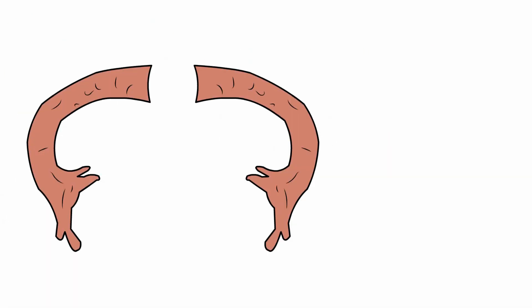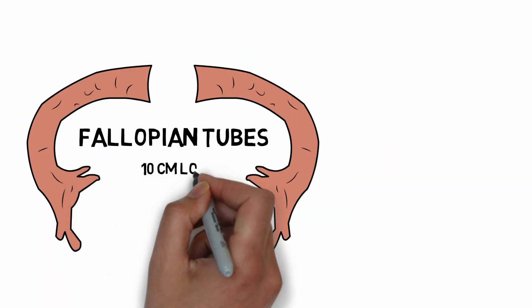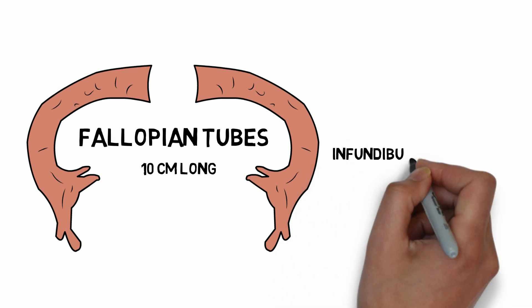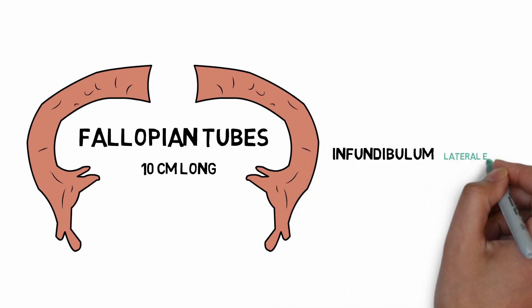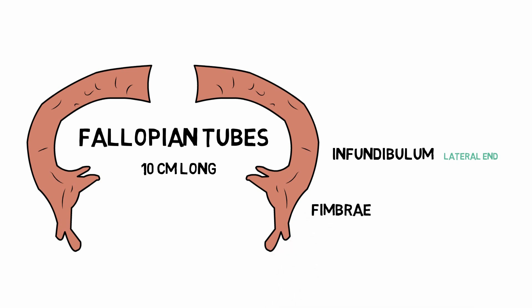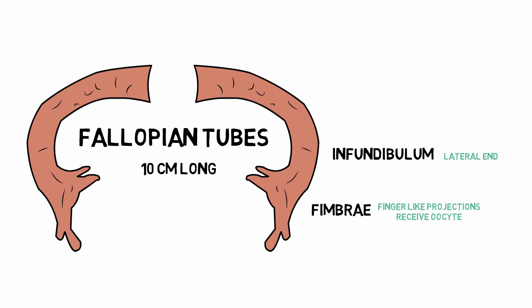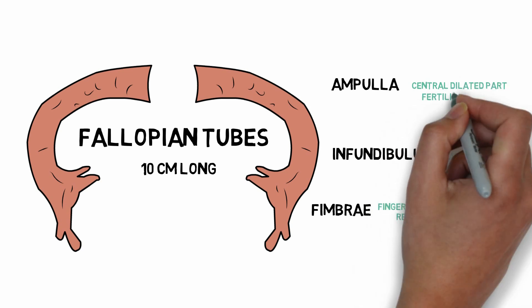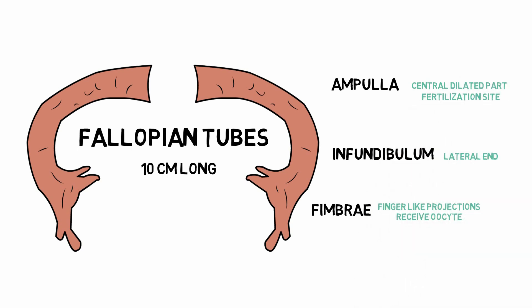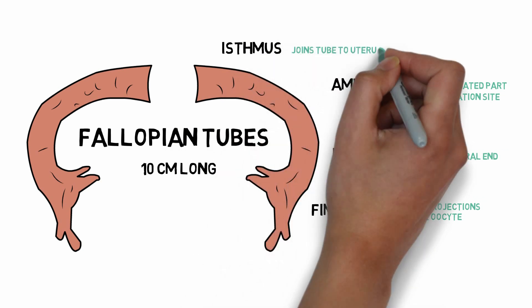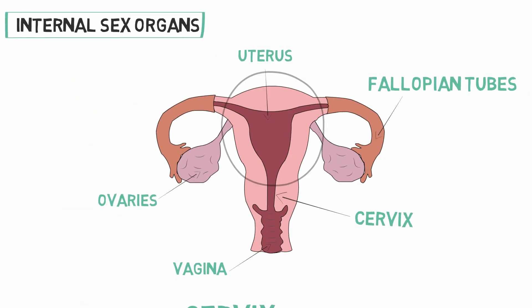Each fallopian tube is a 10 centimeter long hollow organ made up of four parts. The infundibulum is the lateral end, to which numerous finger-shaped projections known as fimbriae are attached; these fimbriae pick up the oocyte once it is released from the ovary. The ampulla is the central dilated part and is the most common site for fertilization. The isthmus is the medial end that connects the tube to the uterus.